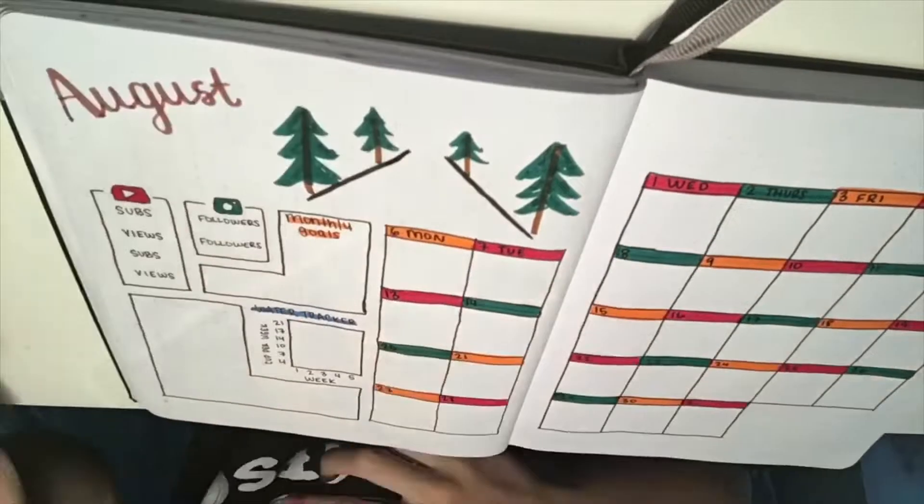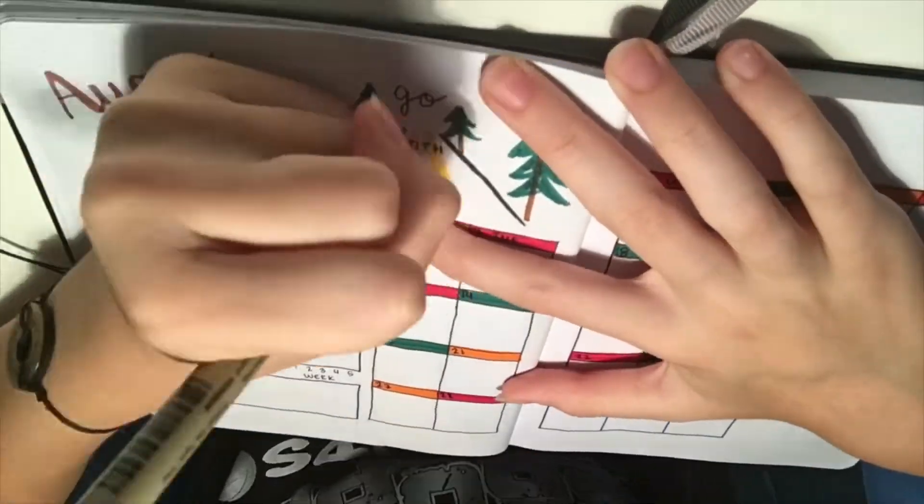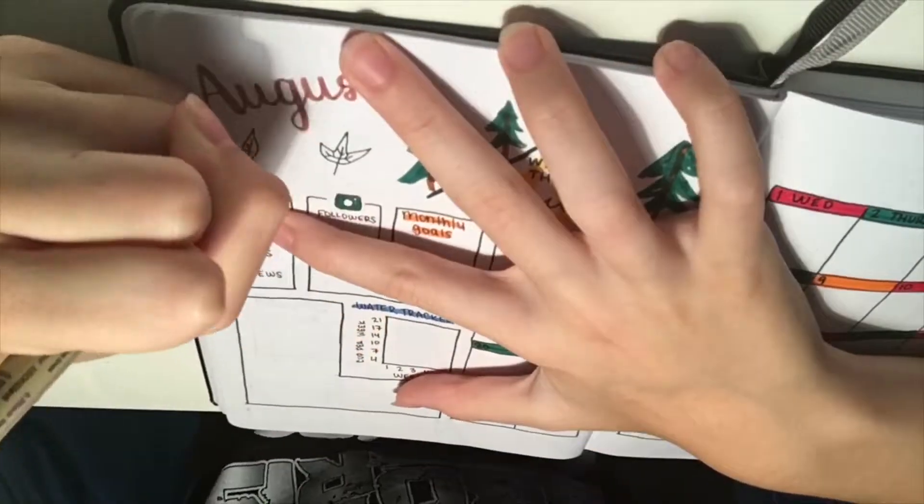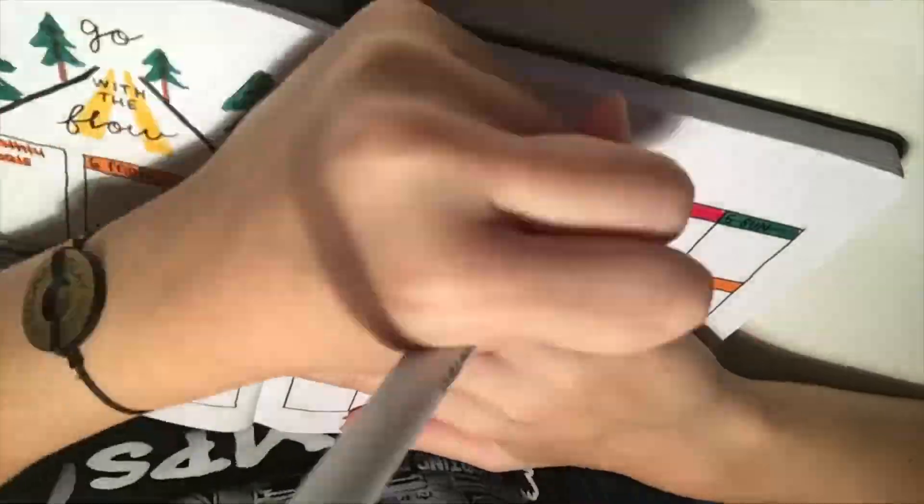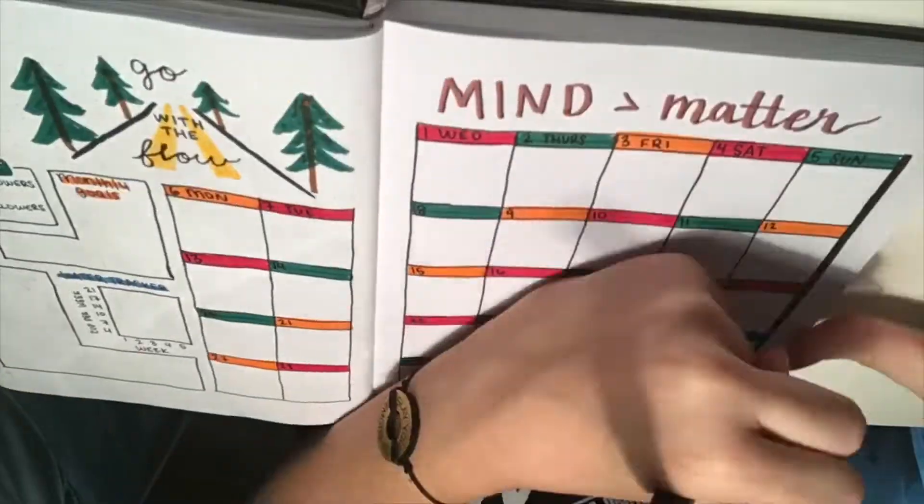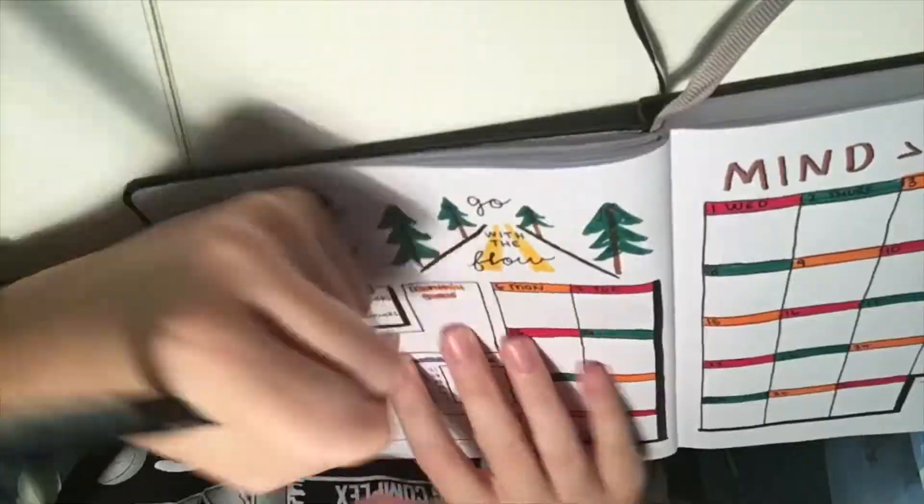At the top of the page, I drew some trees and a little road saying go with the flow. I added some small leaves in the empty spots and added some quotes on the right side, finishing it off with drop shadows over each box.